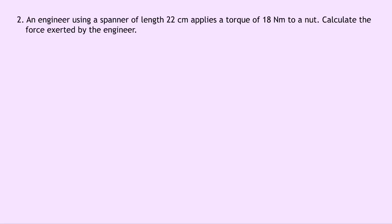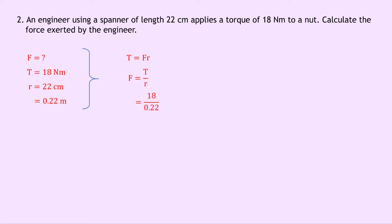Question 2 says that an engineer using a spanner of length 22 centimetres applies a torque of 18 newton metres to a nut. Calculate the force exerted by the engineer. Here we're given the torque and asked to find the force. Converting 22 centimetres to 0.22 metres, and rearranging T equals FR to get F equals T over R, we substitute: 18 divided by 0.22, giving a final answer of 81.8 newtons.